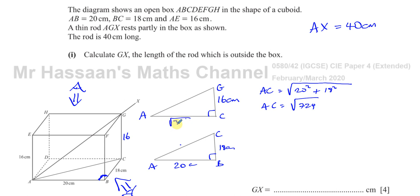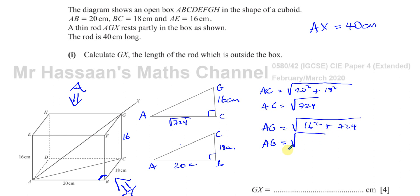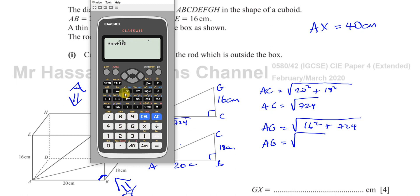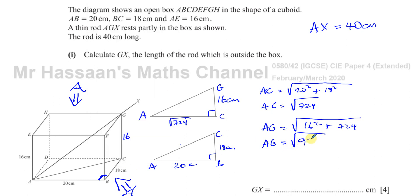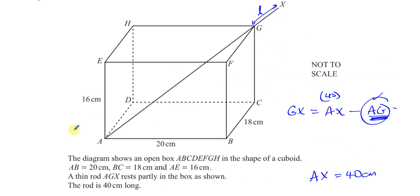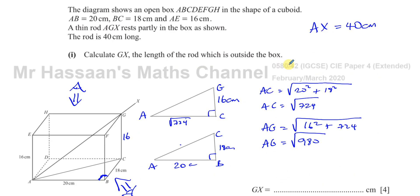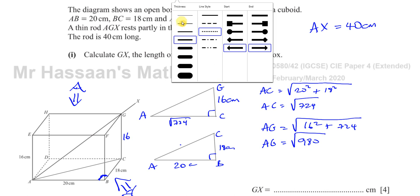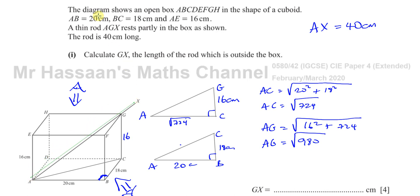Now I can find AG. Using Pythagoras' theorem in triangle ACG, AG equals the square root of AC squared plus CG squared — which is the square root of 724 plus 16 squared. That gives us the square root of 980. So AG equals the square root of 980.